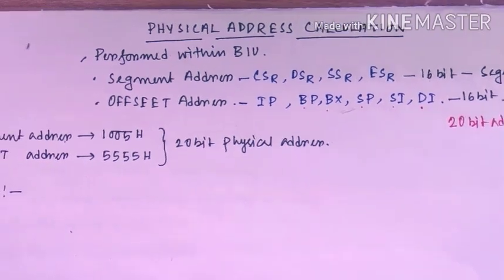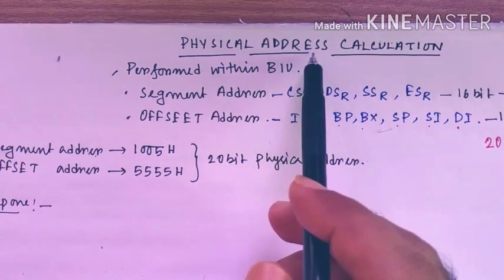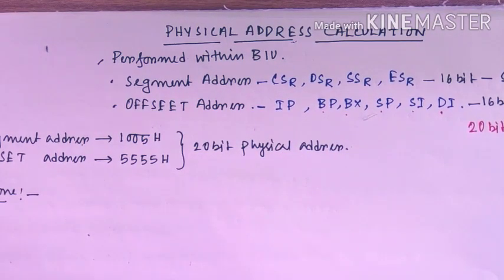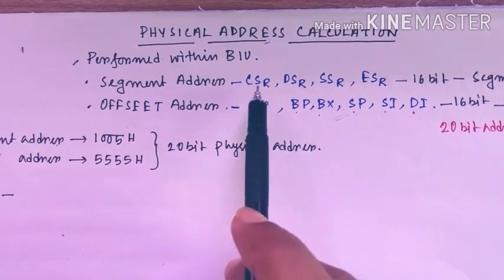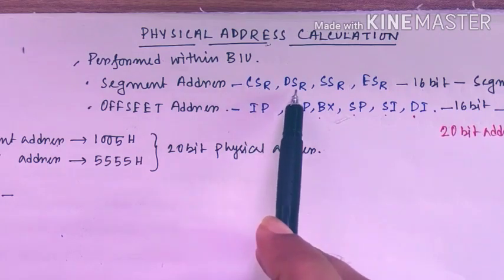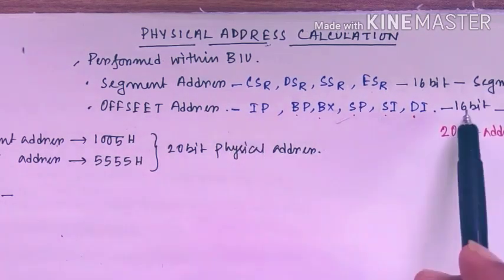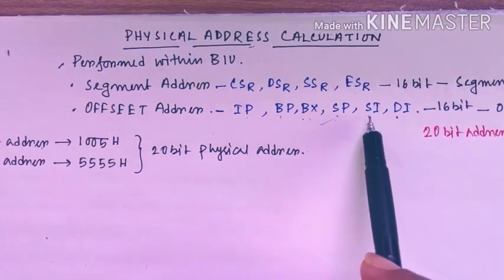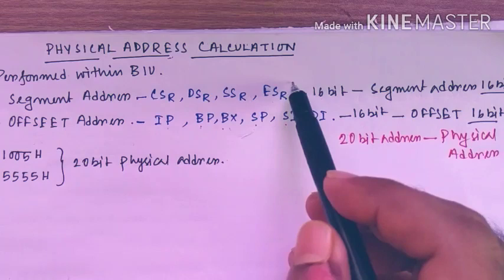So what is the function of this one and how it is done internally — we will try to explain here. The physical circuit required is basically available within the BIU. To do that we need the help of two registers. To calculate physical address, I need two different data: one from the segment register and another one from the offset register. We have four different segment registers: Code Segment, Data Segment, Stack Segment, and Extra Segment registers. We need the offset from registers such as IP (Instruction Pointer), Base Pointer, Base Register, Stack Pointer, Source Index, and Destination Index.